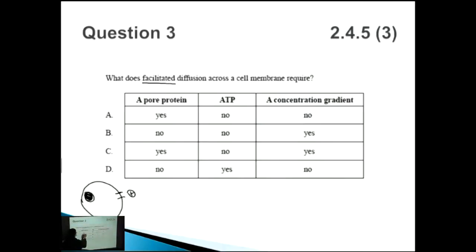So yes it does require a pore protein. It's called facilitated diffusion because facilitate means to help. So this X molecule needs to be facilitated or helped across the cell membrane. It requires a pore protein. Yes it does. So let's get rid of these two already. Does it require ATP? No it doesn't because you're going from a high concentration gradient to a low concentration gradient. No energy required. No ATP required.